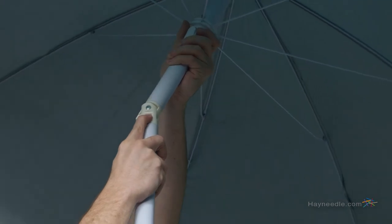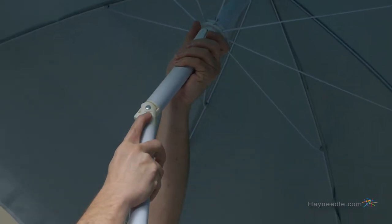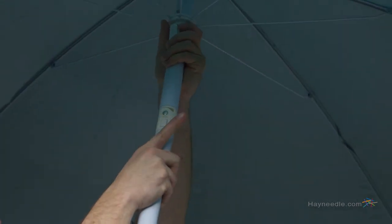And what would Supreme Shade be if it didn't move with the sun? The umbrella has a manual tilt so you can follow the sun all day.